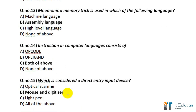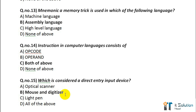Question number 14: Instructions in computer language consist of — its correct answer is both of the above, that is op-code and operand. Question number 15: Which is considered a direct entry input device? Option B — mouse and digit writer.